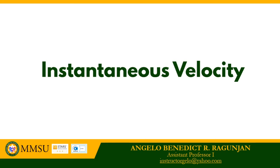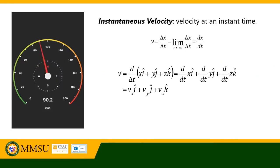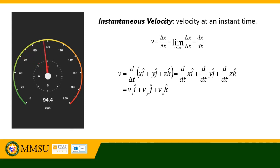This video discusses instantaneous velocity — the velocity at an instant in time. If you drive a car 200 kilometers along a straight road in one direction for four hours, the magnitude of your average velocity is 50 kilometers per hour. It is unlikely to have this velocity throughout the travel; you might increase or decrease in magnitude during travel. To better understand this, we determine the velocity at an instant in time, which is the concept of instantaneous velocity.